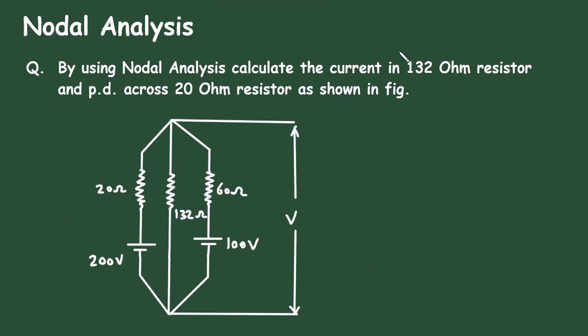This is how we can solve for current and potential difference across the 20 ohm resistor using nodal analysis. Check the link in the comment section to get the free notes on electrical circuits, and thanks for watching.